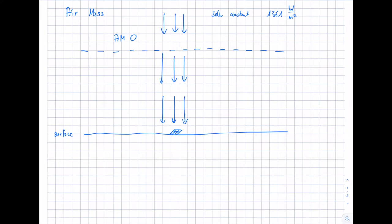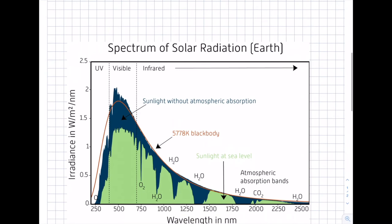When this radiation passes the atmosphere and reaches the ground, it has passed the height or distance of the atmosphere once. In this case, since the radiation has been absorbed, we call this air mass one — the one representing that the absorption length is one times the atmosphere.